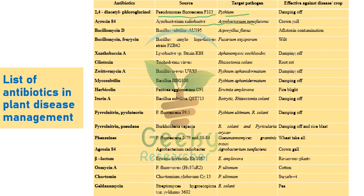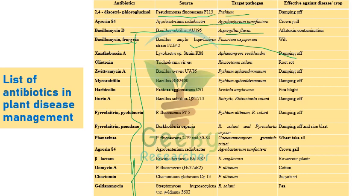Bacillomycin, from Bacillus subtilis, is exploited against Aspergillus flavus. Iturin and Fengicin are isolated from Bacillus amyloliquefaciens and exploited against Fusarium oxysporum. Other antibiotics include Xanthobacin, Gliotoxin, Zwittermicin A, Mycosubtilin, Herbicolin, Iturin A, Pyrrolnitrin, Fengicin, Geldanamycin, and Zeldamycin — all active against various plant pathogens.